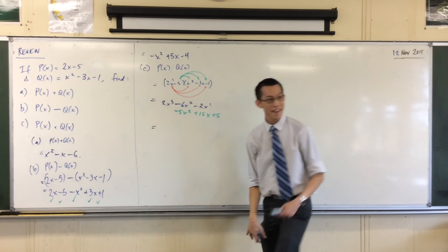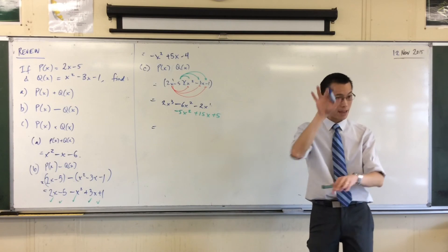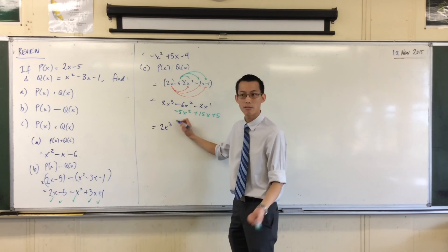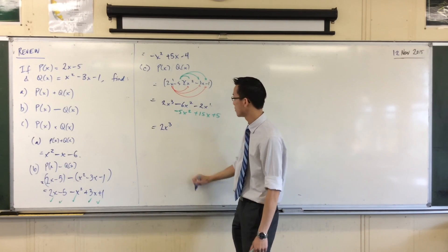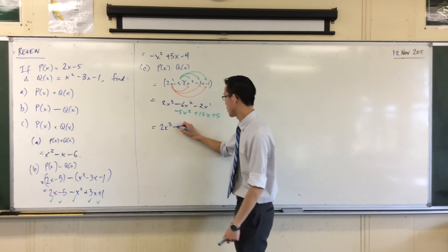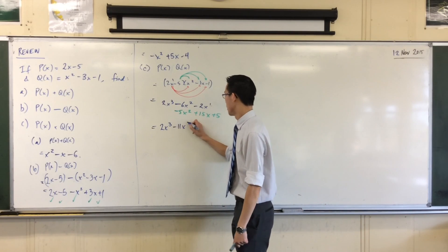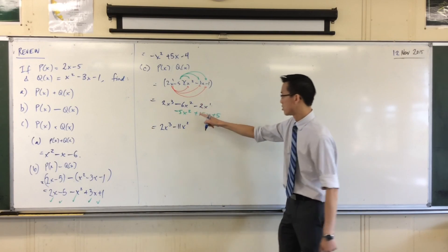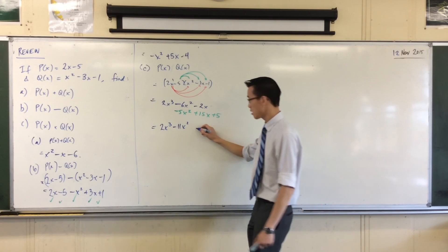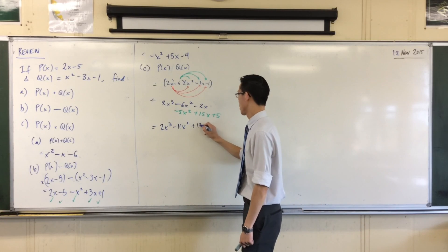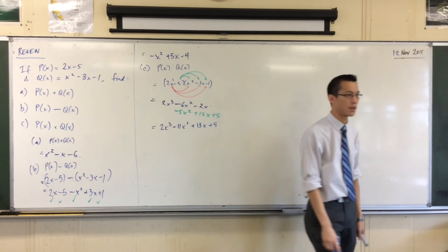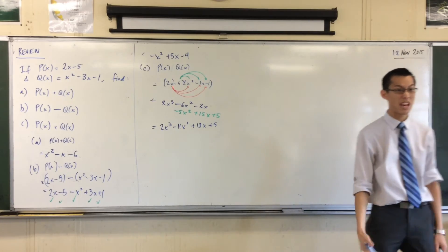Now that I've paired it all up, let's simply collect. 2X cubed is hanging out by himself on the front. Minus 6 minus 5 is minus 11. Minus 2 plus 15 is 13. And that 5 is just hanging out by himself on the end. So the final answer is 2X cubed minus 11X squared plus 13X plus 5.